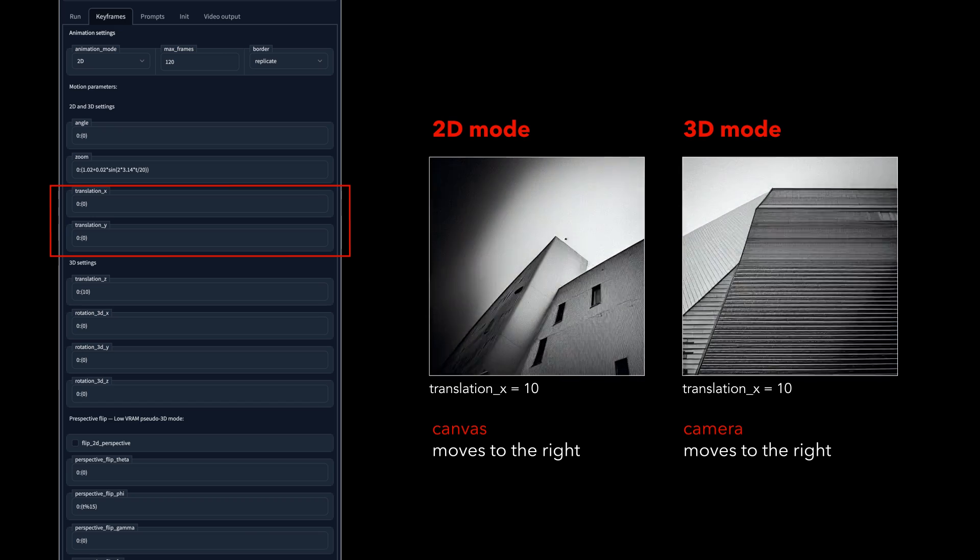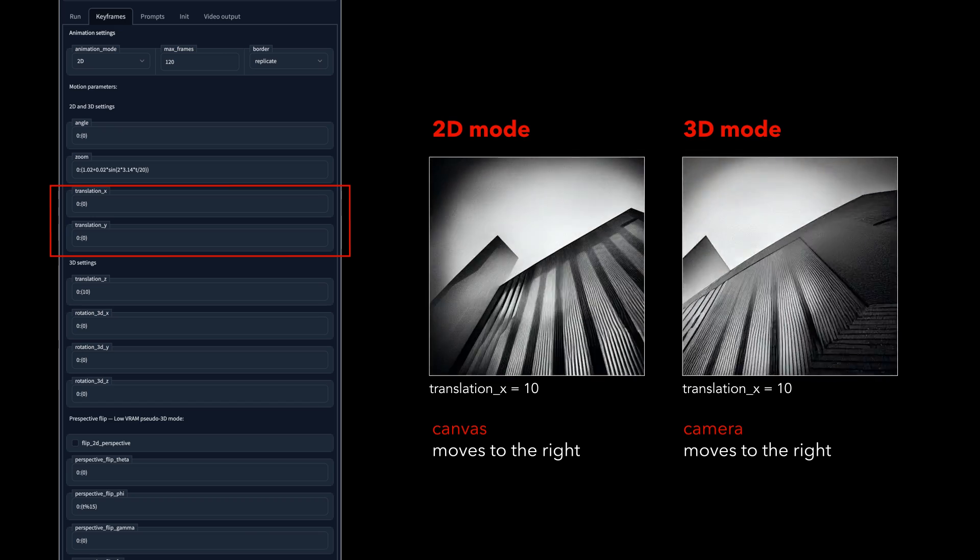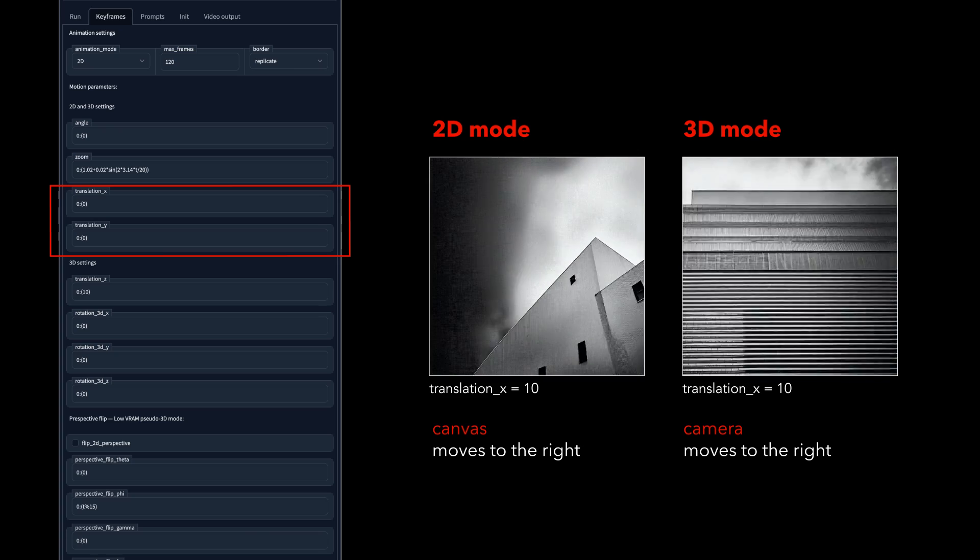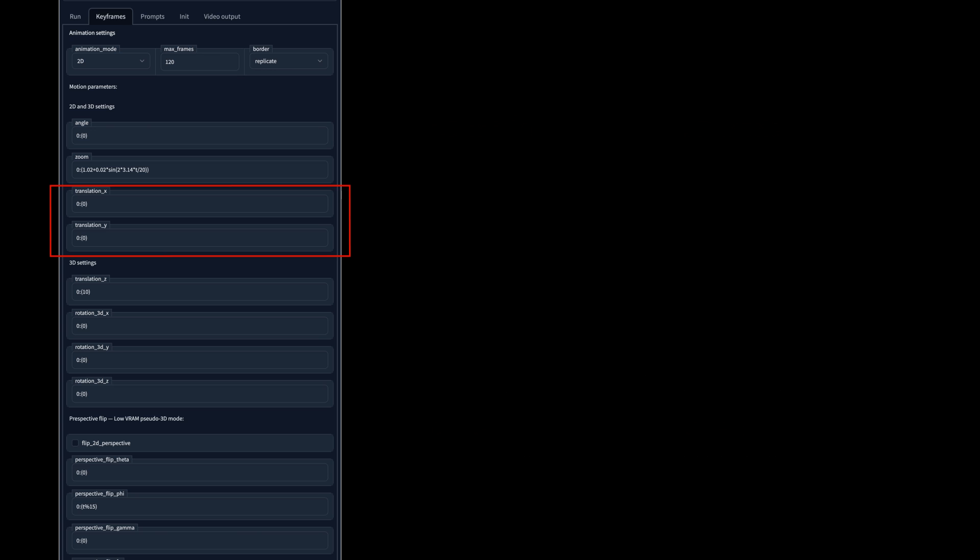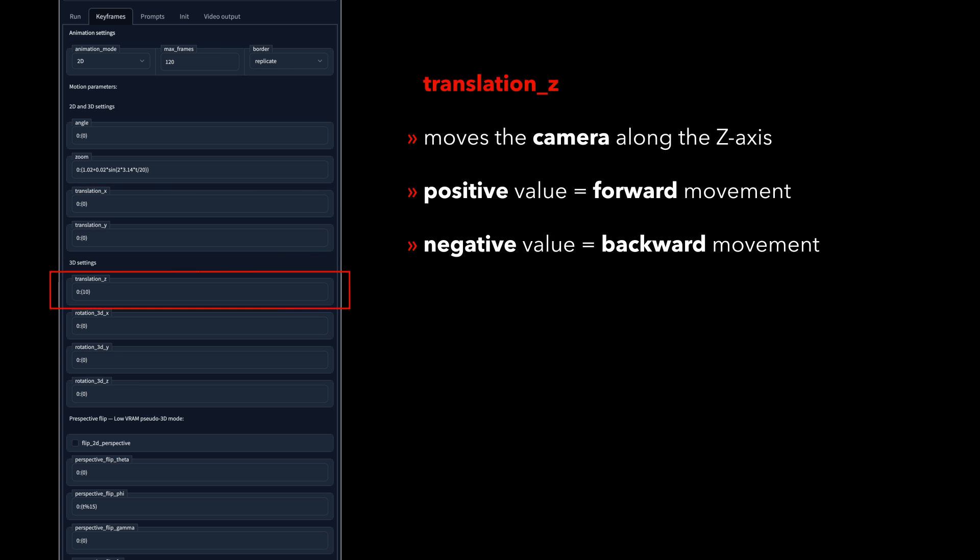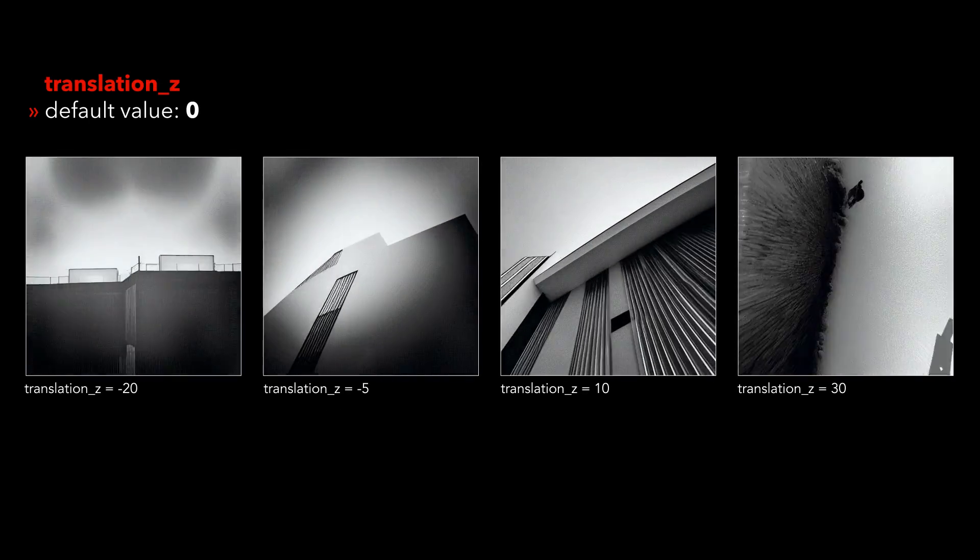The units for these parameters are also not measured in pixels, but representing a value in an arbitrary scale. It's best to play around with the values and see what matches best for your desired result. With the translation z parameter, we get an equivalent to the zoom in 2D mode, with the difference that we now move the camera on the z-axis without the blurriness. A positive value moves the camera forward, and a negative value moves the camera backwards.